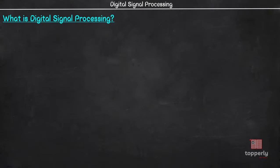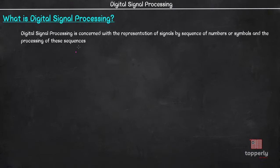What is Digital Signal Processing? Digital Signal Processing is concerned with the representation of signals by sequence of numbers or symbols and the processing of these sequences. As you can see, there are three main points in this sentence: signals, representation of signals and processing of these signals. So, what is a signal?